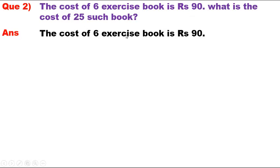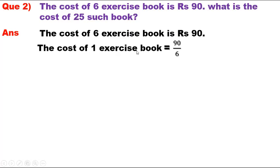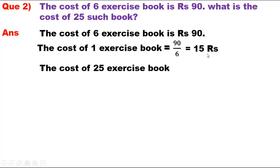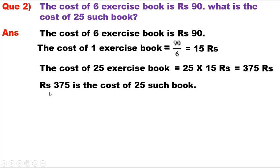Answer. The cost of 6 exercise books is Rs. 90. The cost of 1 exercise book = 90 / 6 = Rs. 15. The cost of 25 exercise books = 25 x 15 = Rs. 375. Therefore, Rs. 375 is the cost of 25 such books.